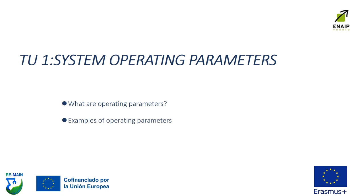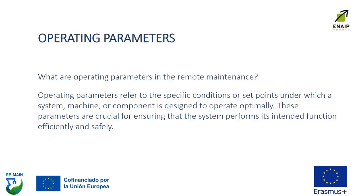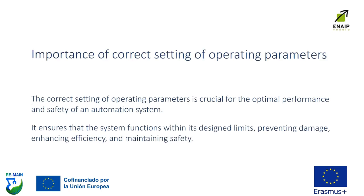What are operating parameters? Examples of operating parameters. In the context of remote maintenance, operating parameters refer to the specific conditions or set points under which a system, machine, or component is designed to operate. These parameters are crucial for ensuring that the system performs its intended function efficiently and safely.